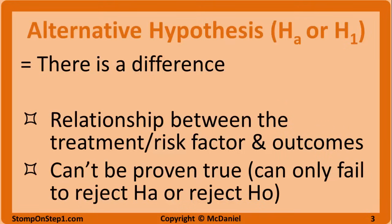However, you never prove the alternative hypothesis is true. You can only reject a hypothesis, say it is false, or fail to reject a hypothesis, which means it could be true but you can never totally be sure. So a researcher really wants to reject the null hypothesis because that is as close as they can get to proving the alternative hypothesis is true. In other words, you can't prove a given treatment caused a change in outcomes, but you can show that conclusion is valid by showing the null hypothesis is highly improbable given your data.